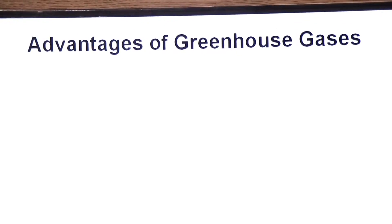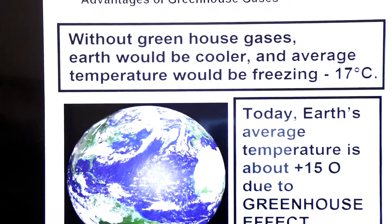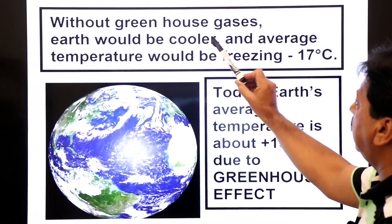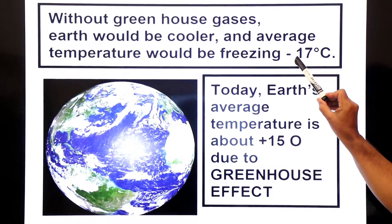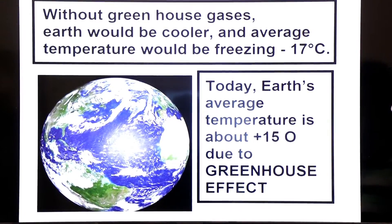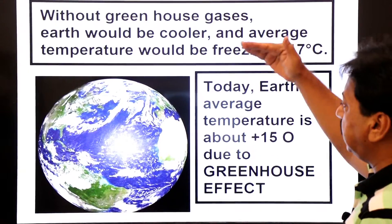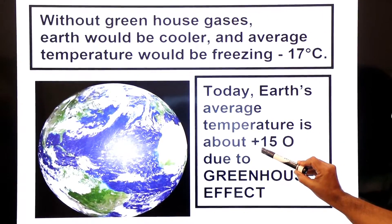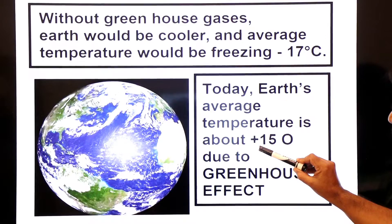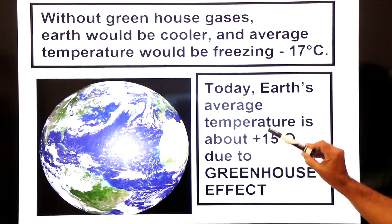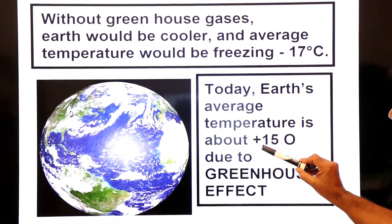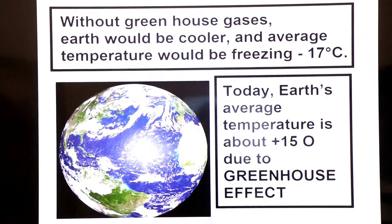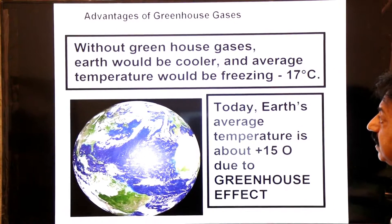Now let's look at the advantage of greenhouse gases. Without greenhouse gases, the earth would be much cooler, and the average temperature would be freezing — minus 17 degrees centigrade. Due to the greenhouse effect, today the earth's average temperature is about plus 15 degrees centigrade, which is above the freezing point. This is an advantage; otherwise our earth would be too cold.